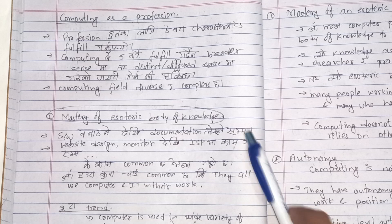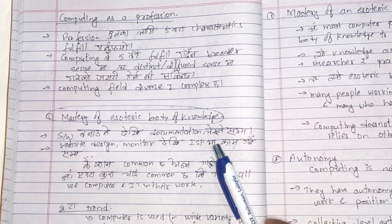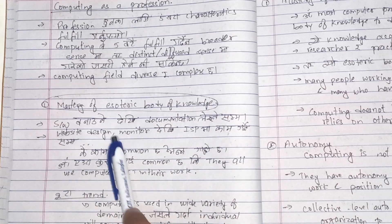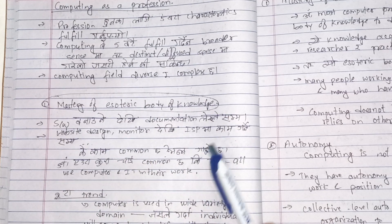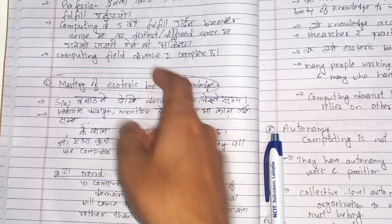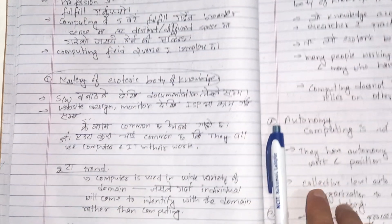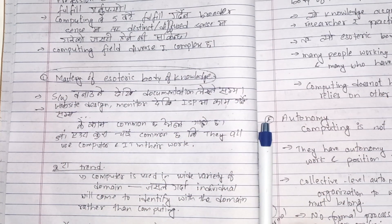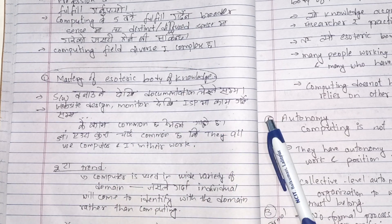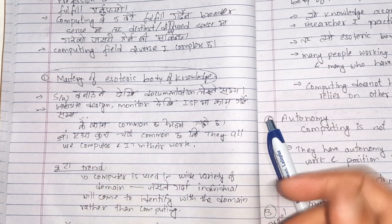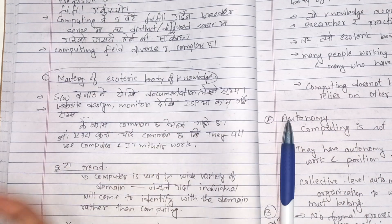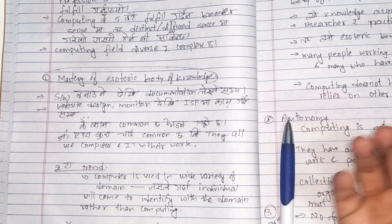The computing field is diverse and complex. For example: software, documentation, website design, internet service provider — what is common to all of these? They are all diverse and complex. What is common to do computing profession? They all use computers and IT in their work.